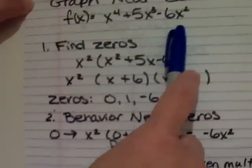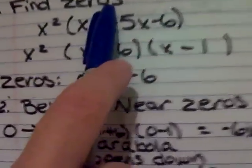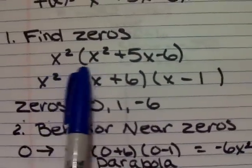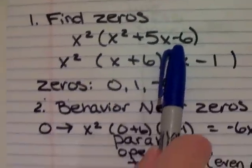The first thing we need to do is to find the zeros. Finding the zeros, we're basically factoring the equation. So we've taken out an x squared, and we have a quadratic left, x squared plus 5x minus 6.